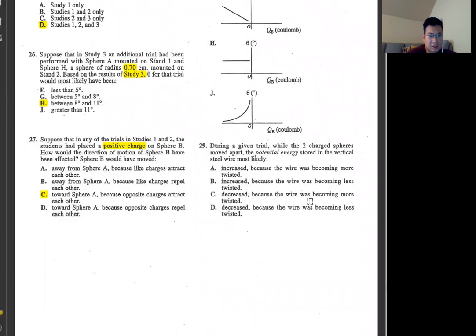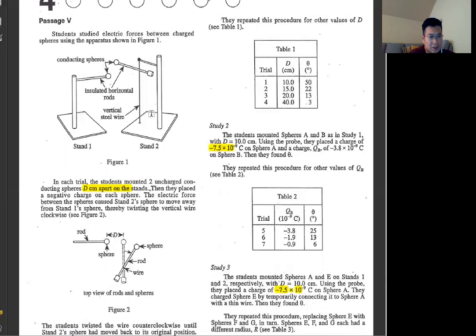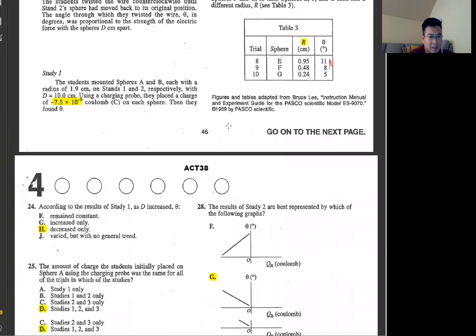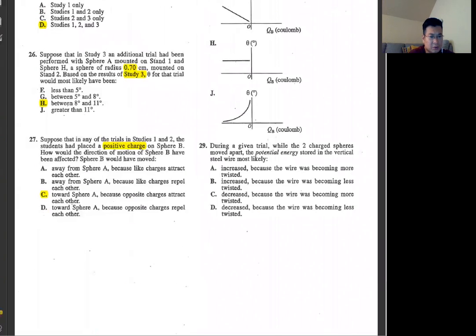Number 29, during the given trials, two charged spheres move apart. Potential energy stored in the vertical steel wire. The rod is going to touch this wire and then twist it around. Because of that, the potential energy will increase because it's going to slow it down. Slow down means potential energy goes up, kinetic energy goes down. So A.